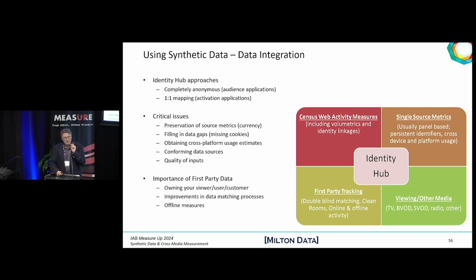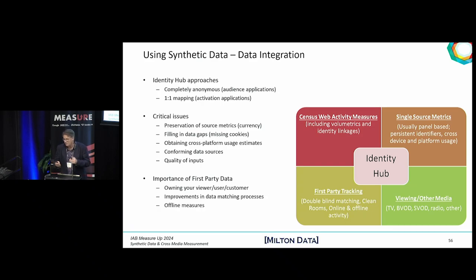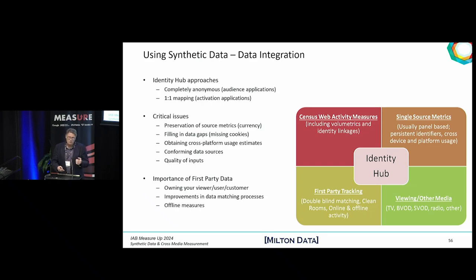The need for first party data has never been more apparent. Cookie deprecation discussions notwithstanding, there are going to be challenges using the traditional methods — everything from likes through to now the ability to link it back to activation level data. If I was to urge this group to consider one thing: getting access to your own first party data as a major project is something that all of us should be undertaking. We also need to understand both the limits and how far we can push data matching, and understand the methodologies being used to assign linkages between primary sources and modelled sources.